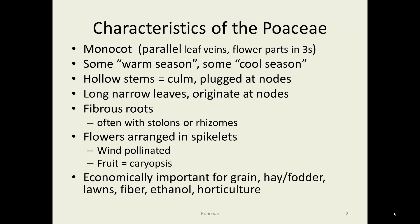Some characteristics of the Poaceae: this is a monocot family, so parallel leaf veins, flower parts in threes. Some of them are warm season and some are cool season — I'll go into that later. They have hollow stems for the most part, and that hollow stem is called a culm, C-U-L-M. They are not completely hollow; there are plugs at the nodes, which are growth areas. The nodes are where the leaves come off. They are generally long and narrow, as you would expect in a monocot.